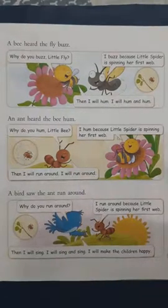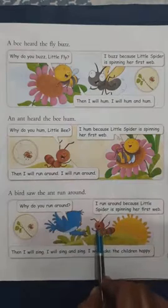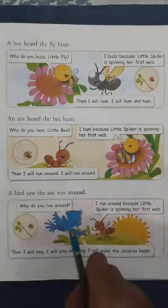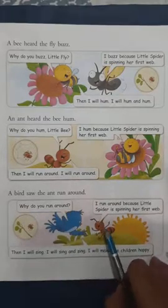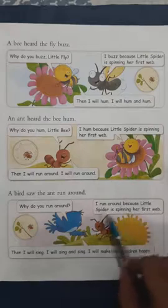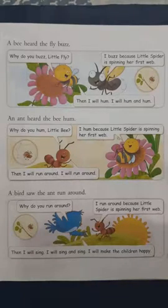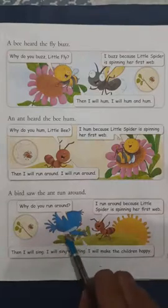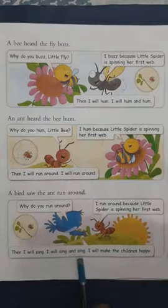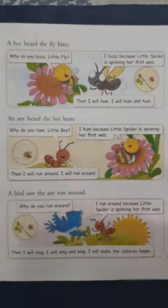Then what happened next? A bird saw the ant run around. A bird saw the ant is running here and there. Then the bird asked, why do you run around? Then ant said, I run around because little spider is spinning her first web. Little spider is spinning her first web, and I am very happy, so I run around. Then by hearing this, this bird also became very happy. And what does the bird say? Then I will sing. I will sing and sing. I will make the children happy.